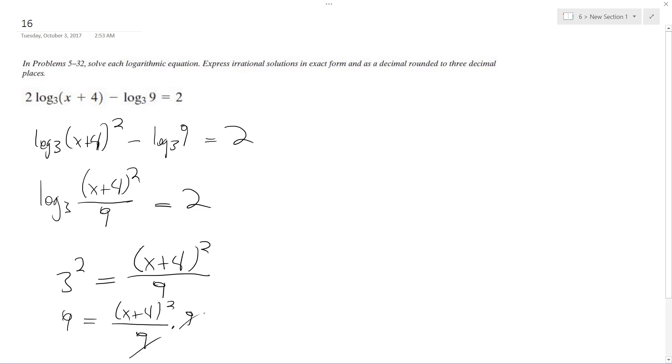So multiply each side by 9. I get x plus 4 squared equals 81. Square both sides. I get x plus 4 equals 9. Subtract 4 from both sides. I get x is equal to 5.